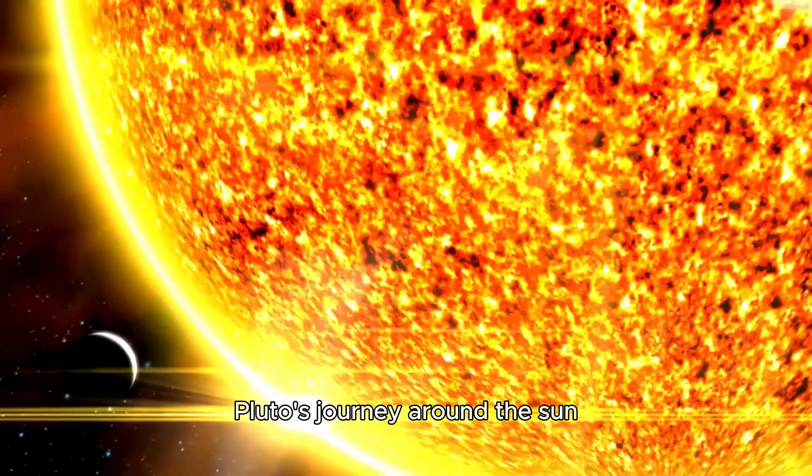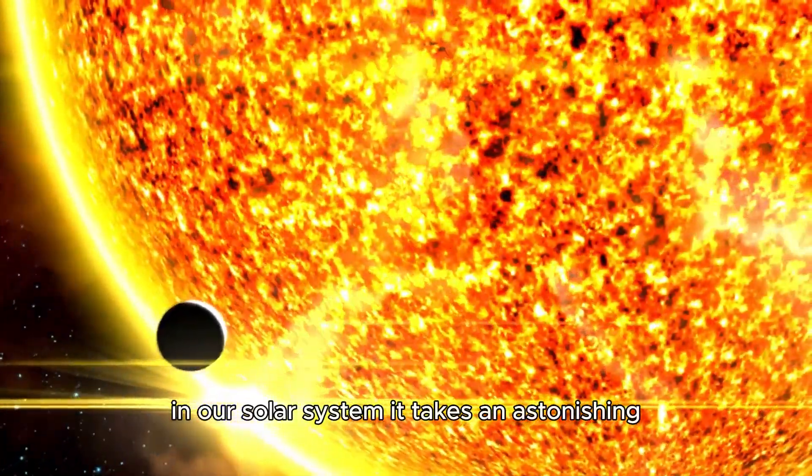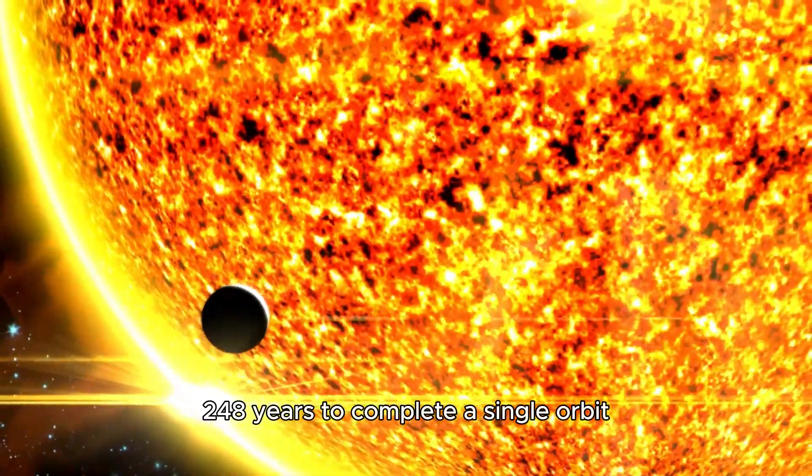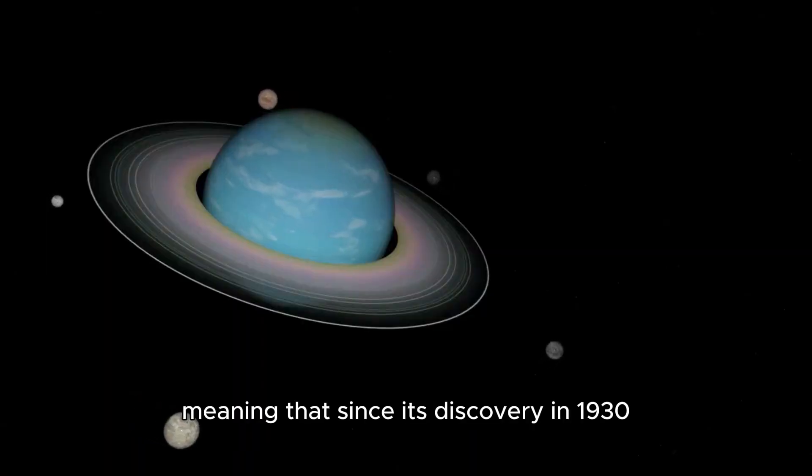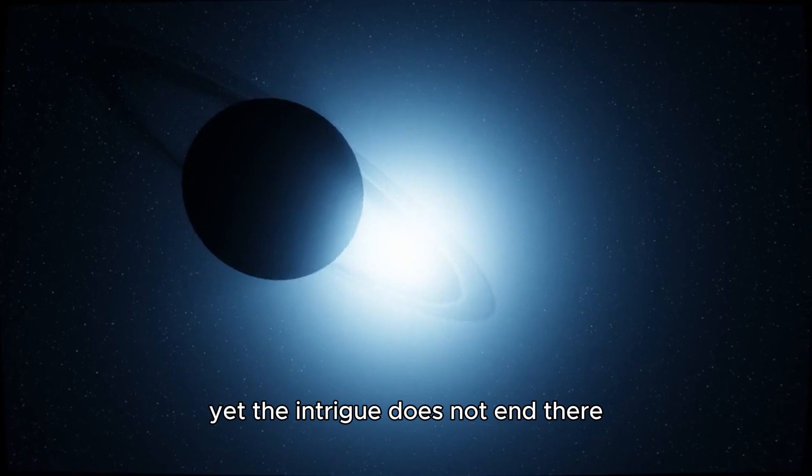How is such an event even conceivable? Pluto's journey around the Sun is unlike that of any other planet in our solar system. It takes an astonishing 248 years to complete a single orbit, meaning that since its discovery in 1930, it hasn't even finished one complete revolution.